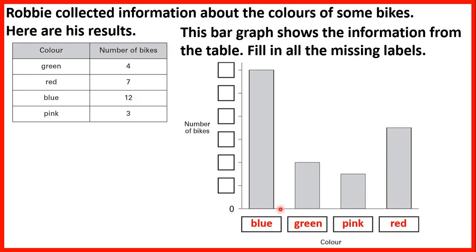We know that there are 12 blue bikes, but for the bar that's blue we go up 1, 2, 3, 4, 5, 6 lines. So we know that we're not going up in ones with each line. We must be going up in twos because we have 2, 4, 6, 8, 10, 12. We have a total of 12 bikes that are blue and if we're splitting that between 6 lines, 12 divided by 6 is 2, so that's an increase of 2 with each line.